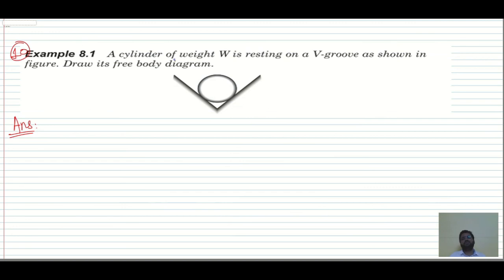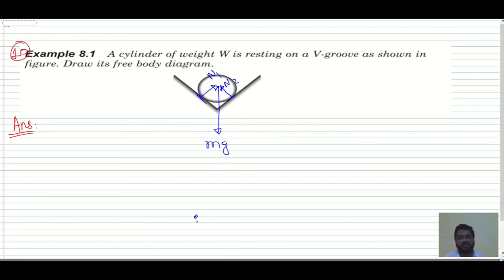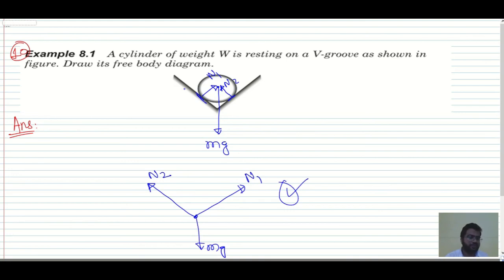Question 10, the last question: a cylinder of weight W is resting on a V-groove as shown in the figure. Draw its free body diagram. There is contact at two points, so normal reaction N1 and N2 must be there. Both forces pass through the center of the cylinder. And one more force is Mg acting in the downward direction. So: Mg downward, N1 and N2 acting at angles through the center. This is the free body diagram for the cylinder. I hope all these questions are clear. If anyone has any doubt, comment in the comment box and I will try to reply as soon as possible. Thank you so much.